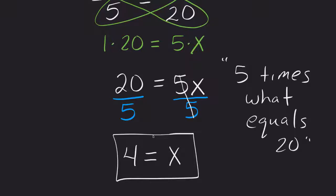Okay, so that's how we use the cross products property. It just says that we can multiply the extremes. We can multiply the means. And they should then be equal to each other.